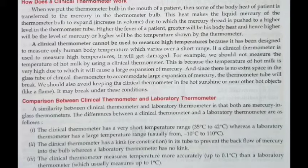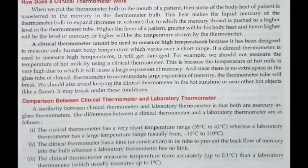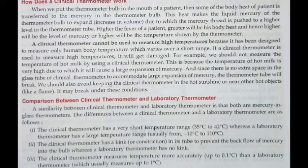Comparing the clinical and laboratory thermometer: the clinical thermometer ranges from 35 to 42 degree Celsius, while the laboratory thermometer ranges from minus 10 to 110 degrees. The clinical thermometer has a kink that prevents the backflow of mercury, whereas the laboratory thermometer has no such kink. The clinical thermometer measures temperature more accurately than the laboratory thermometer.